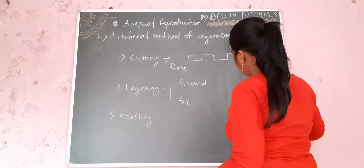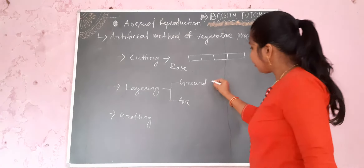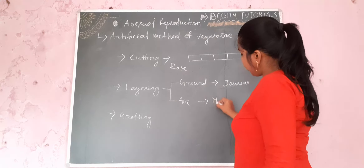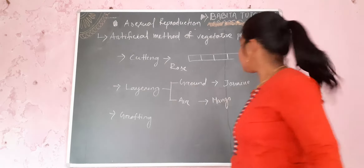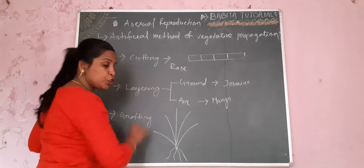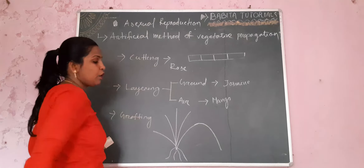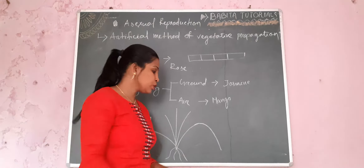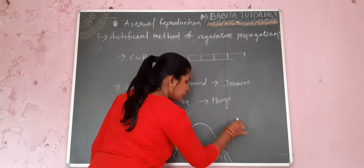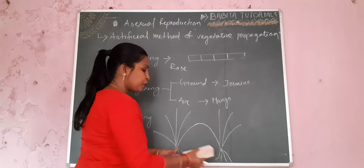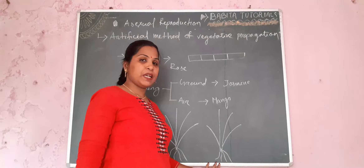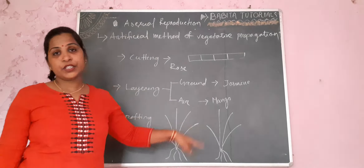In the case of layering, the branch should be brought in contact with the ground. Ground layering is mostly done in the case of jasmine plants. The branches of the jasmine fall on the ground and that branch contains nodes. From the nodes, roots will arise. After the root arises, you can cut the plant from the parent plant and you will get a new jasmine plant. That is ground layering.